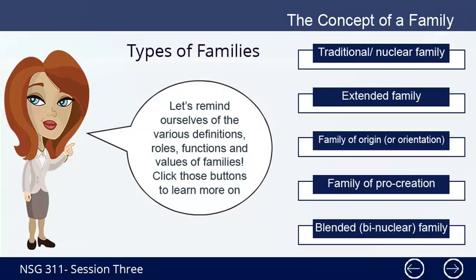Types of families. Let's remind ourselves of the various definitions, roles, functions and values of families. 1. Traditional or nuclear family — a social unit composed of a father and a mother joined together in matrimony and their biological children or offspring, natural, adopted, or both. 2. Extended family — a family that extends beyond the nuclear family, consisting of grandparents, aunts, uncles and cousins all living nearby or in the same household. An example is a married couple that lives with either the husband's or the wife's parents.